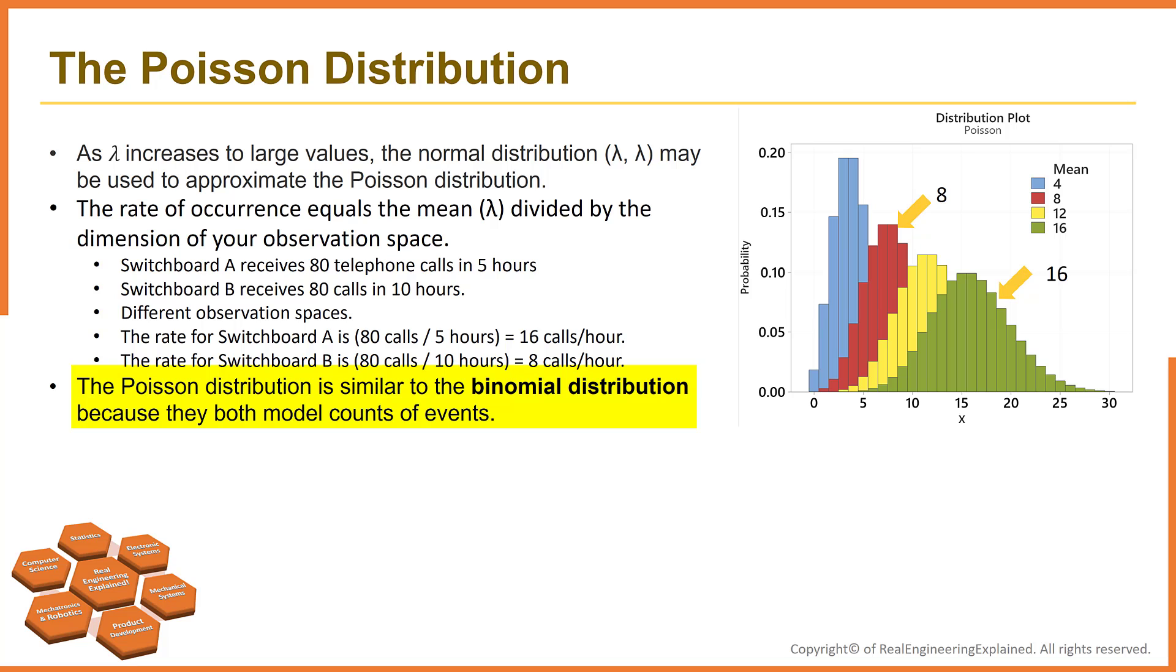The Poisson distribution is similar to the binomial distribution because they both model counts of events. The Poisson distribution places no upper bounds on this count. A switchboard could receive an unlimited number of calls in a day and not violate Poisson distribution requirements. But the binomial distribution does set an upper limit on the count. The number of events you observe cannot be greater than the number of trials you perform.